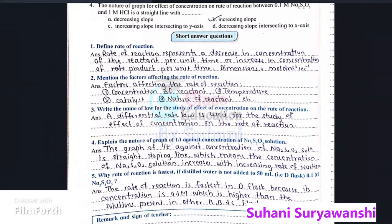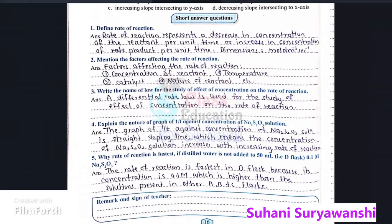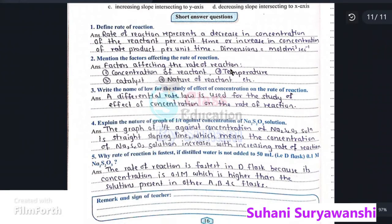Next, short questions. First is define rate of reaction. Rate of reaction represents a decrease in concentration of the reactant per unit time or increase in concentration of a product per unit time. The dimensions are mole per meter cube inverse and second inverse.